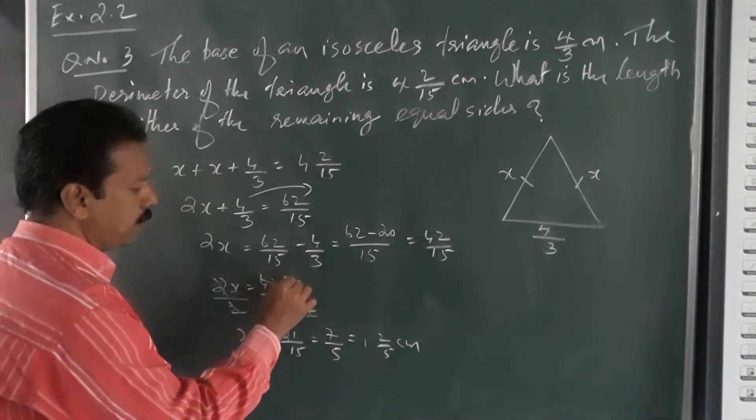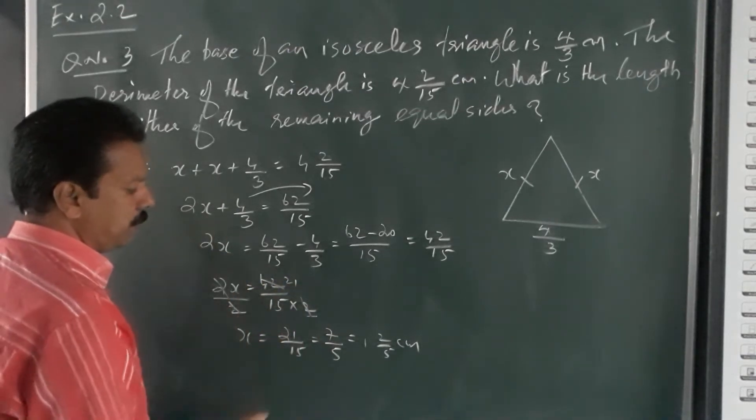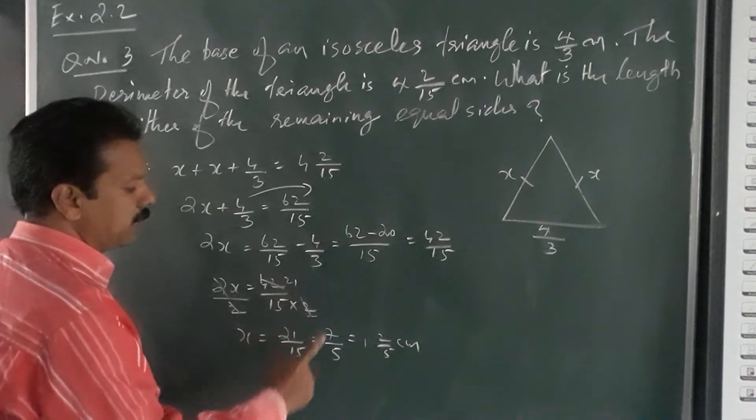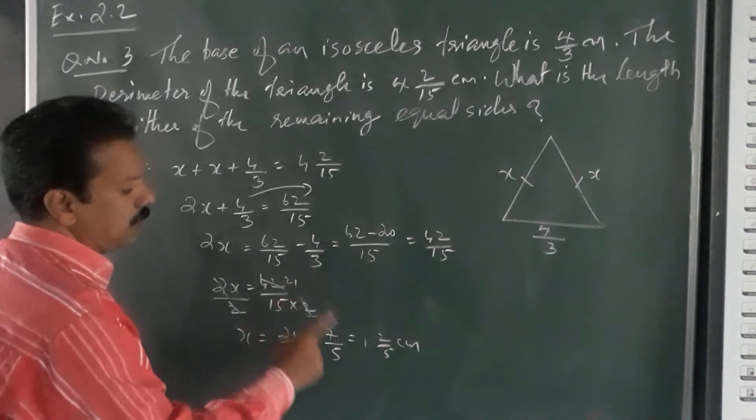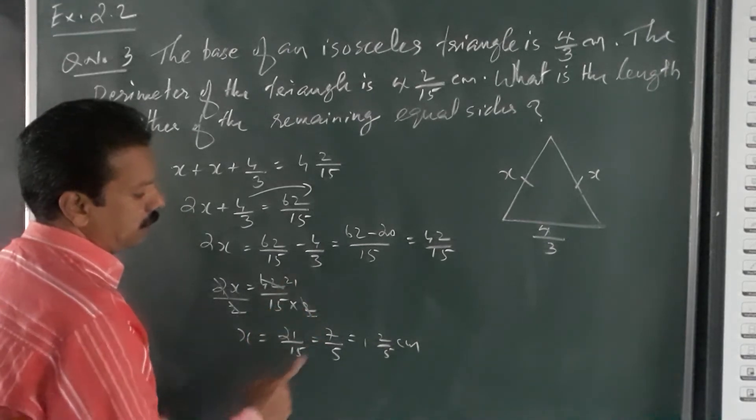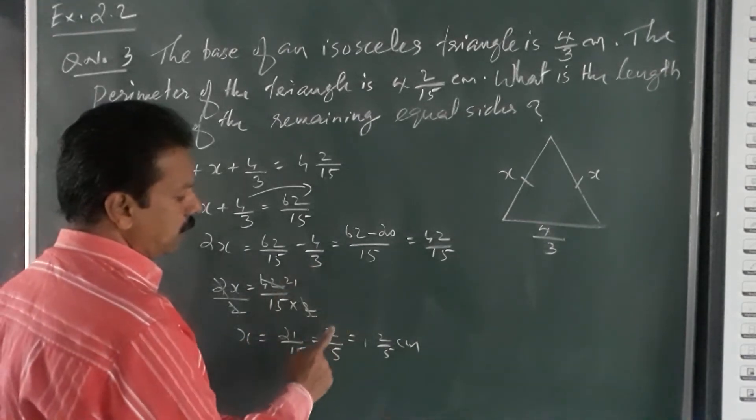x is equal to 21 by 15. In 21, 3 goes 7 times. In 15, 3 goes 5 times. So x equals 7 by 5.